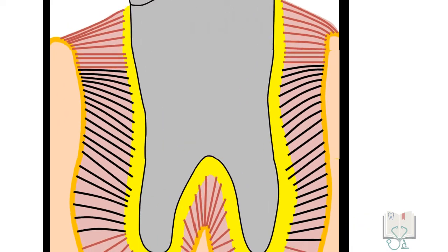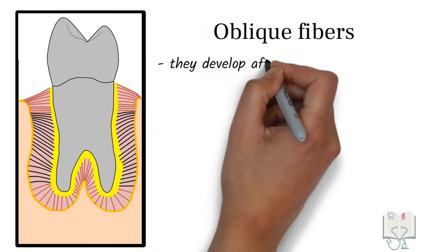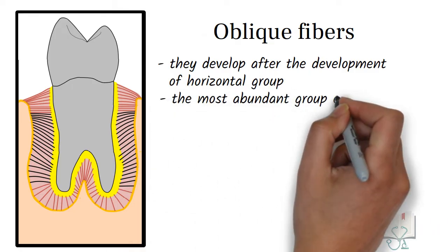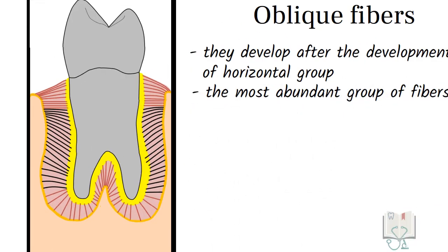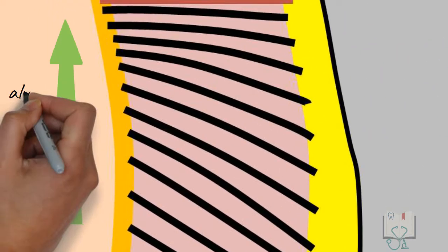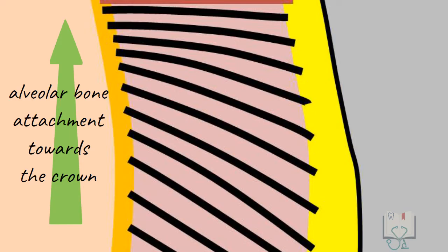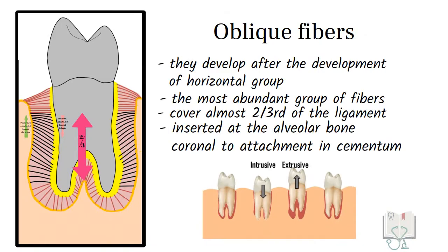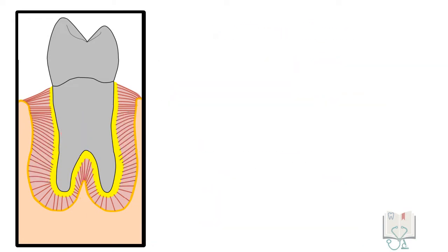Coming to the next group, oblique fibers. They develop after the horizontal group and are the most abundant group of fibers. They cover almost two-thirds of the ligament. Their insertion at the alveolar bone is coronal to their attachment in the cementum. These fibers resist intrusive and extrusive forces.